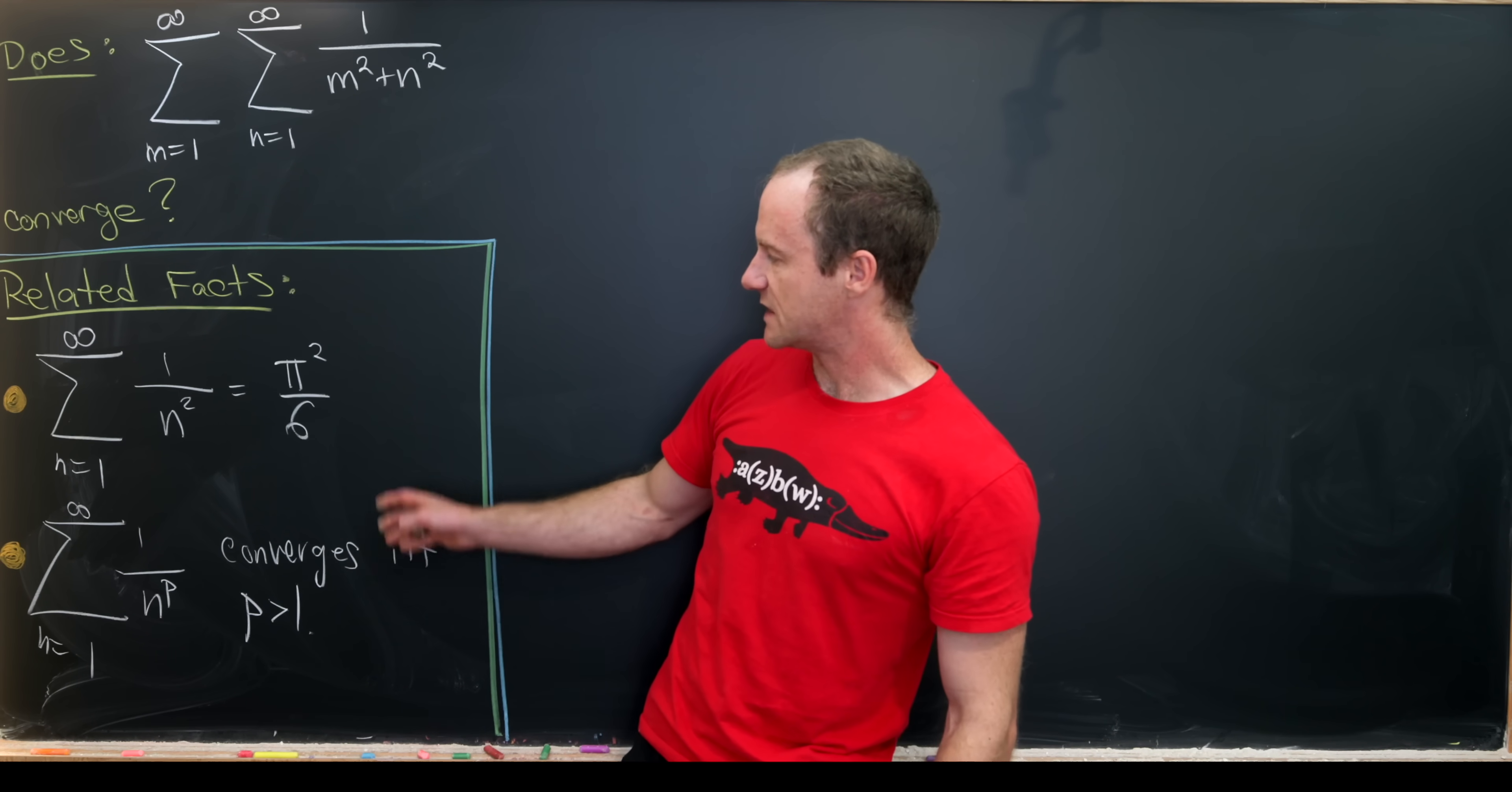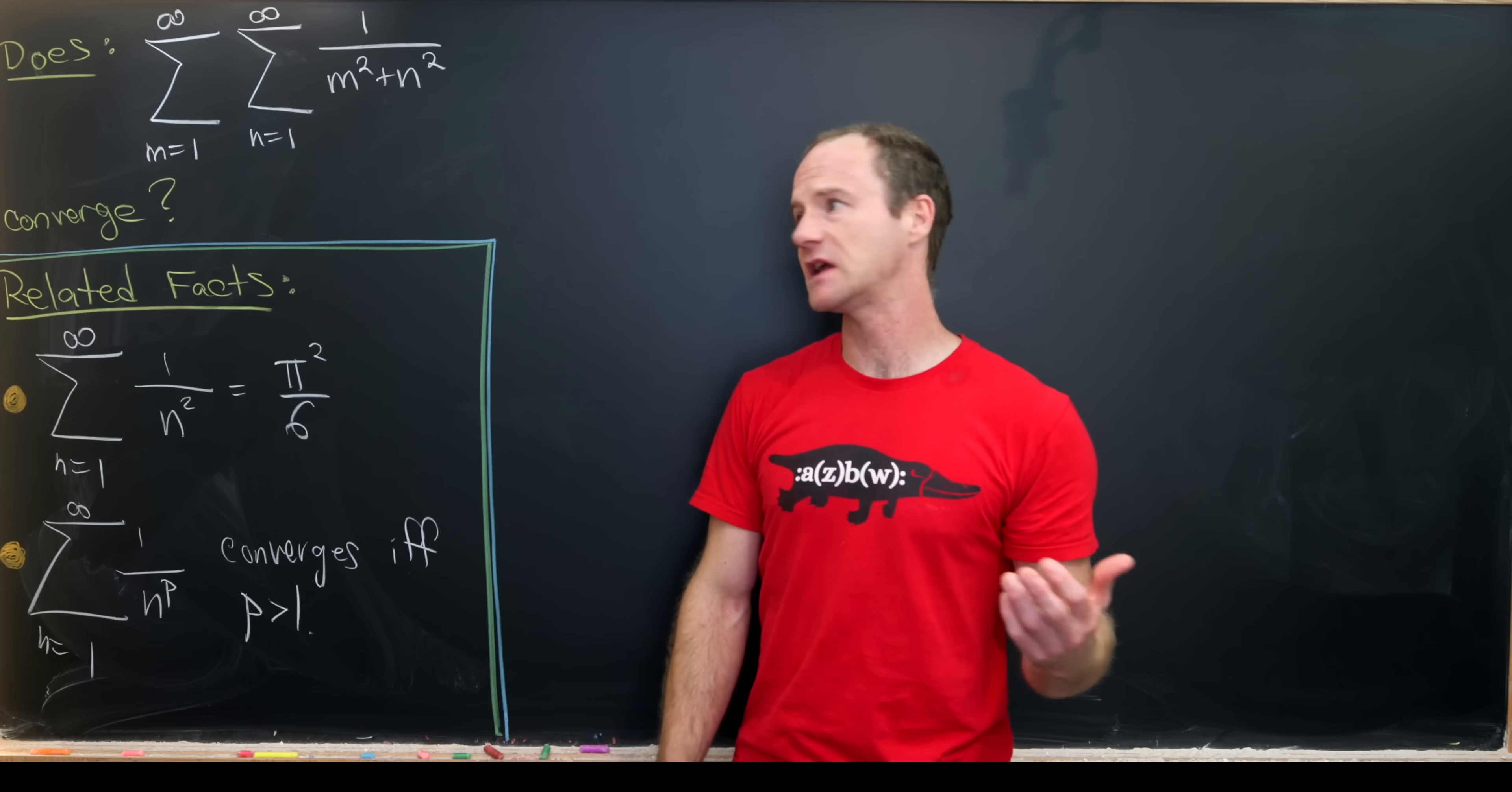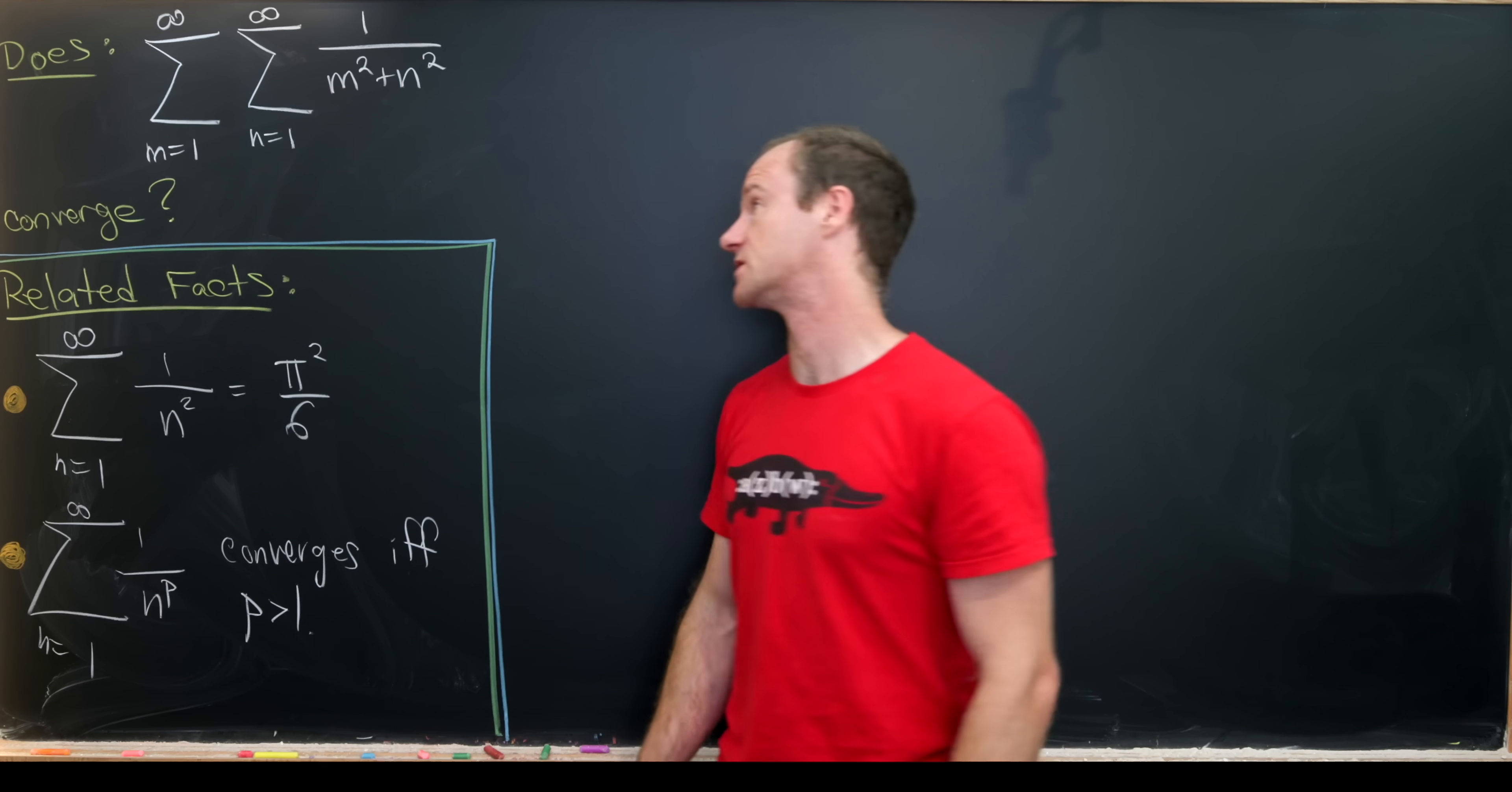I think looking at this provides some motivation that this sort of thing should converge because we've got squares in the denominator. But then again, we've got a double sum. So maybe the fact that we've got a double sum counteracts those squares or something. Anyway, let's explore it a little bit to find the answer to this question.